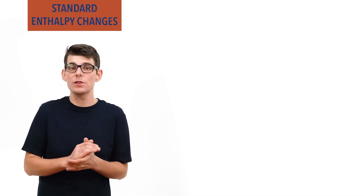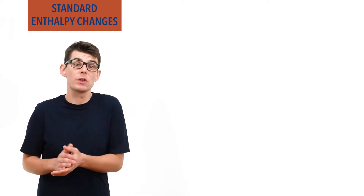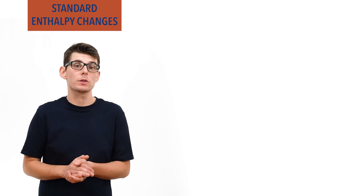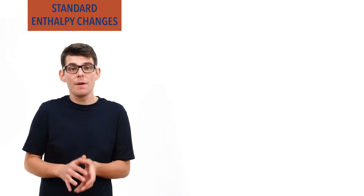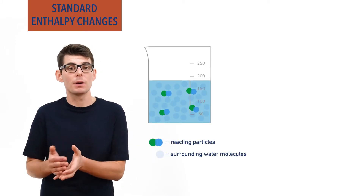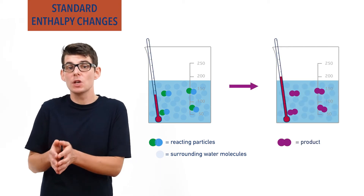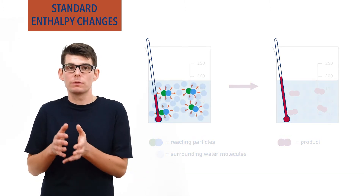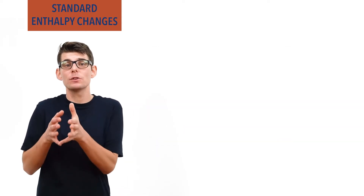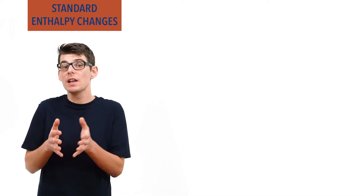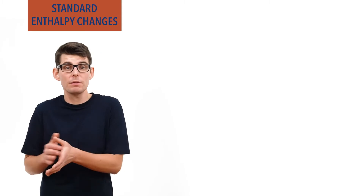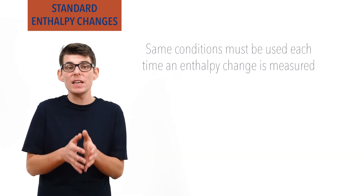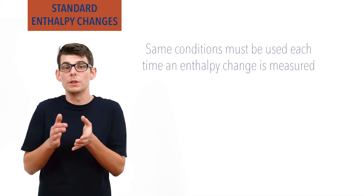How the enthalpy of reactants changes during a reaction can be determined by considering the temperature change of a reaction's surroundings. The surroundings just refer to all the particles that are around the reacting particles but aren't actually reacting. In an aqueous reaction, for example, the surroundings would be all the water molecules around the reacting particles. The greater the temperature change of the surroundings, the more energy that has been transferred between the reacting particles and their surroundings, and the greater the enthalpy change of the reaction. The problem here is that enthalpy is based on the heat content of a system, and the heat content changes based on the temperature and pressure of the system. If we are finding enthalpy changes by measuring temperature changes of a reaction's surroundings, we have to make sure the same conditions are being used each time enthalpy change measurements are recorded, to enable comparisons to be made.